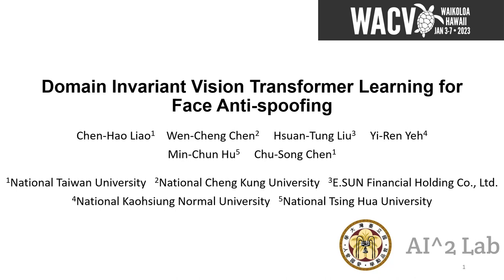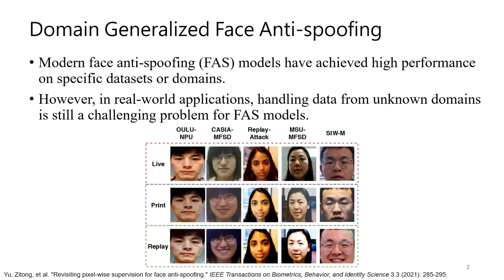In this work, we present a domain invariant vision transformer learner for face anti-spoofing. Face anti-spoofing models have been widely used in digital security systems to prevent impersonation by fake faces. Benefiting from the capability of deep neural networks, existing FAS models achieve high performance on a single baseline or domain.